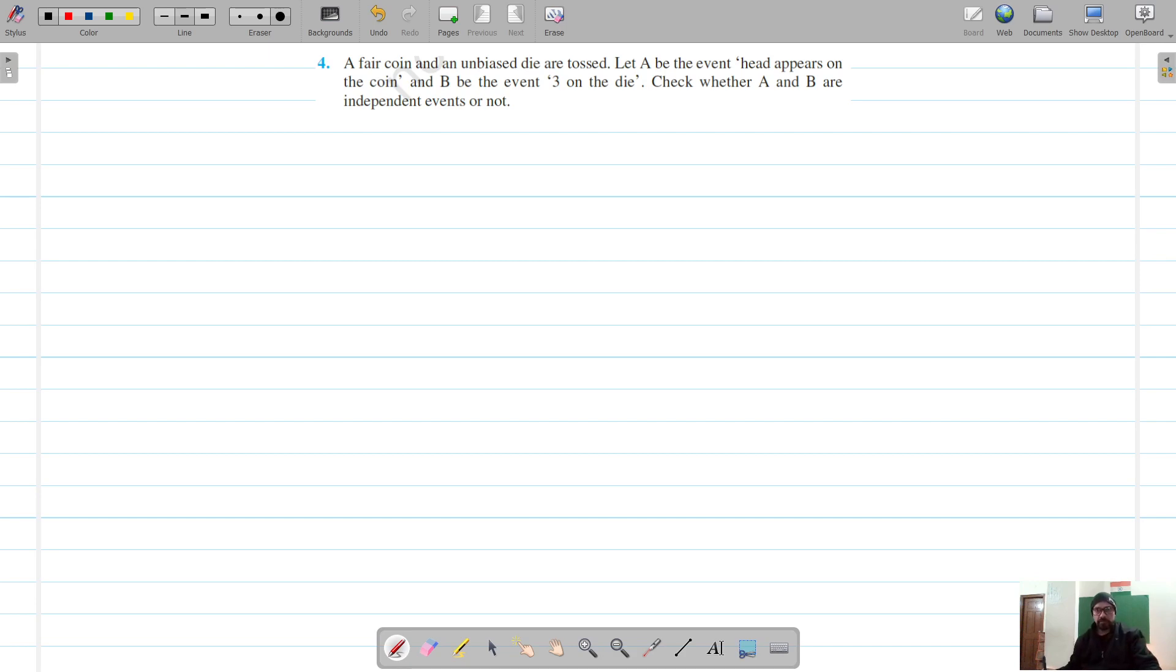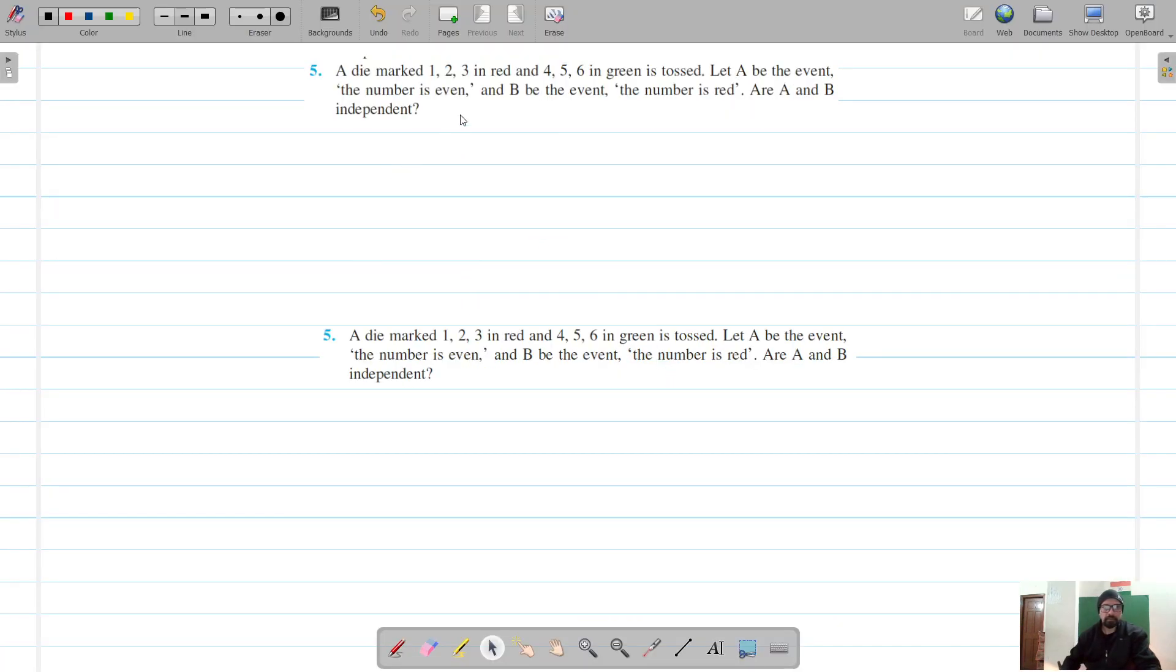Our next question is question number five. This question states that a die is marked with one, two, three in red and four, five, six in green.